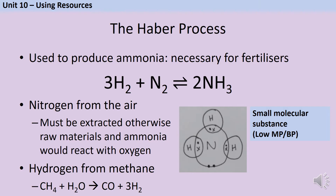You've already met ammonia much earlier in the GCSE when you did the structure and bonding topic. It's one of the eight named examples of small covalent molecules that you're supposed to be able to draw dot and cross diagrams for. Small molecular substances always have low melting points and low boiling points because it's the weak intermolecular forces between molecules that break — not the strong covalent bonds inside — so ammonia is a gas at room temperature.